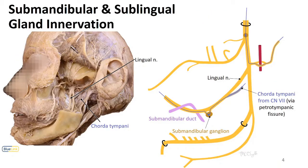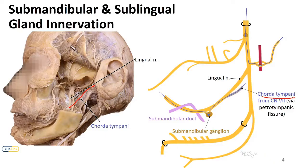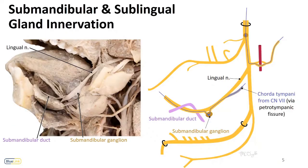Next is innervation of the submandibular and sublingual glands. This comes through the chorda tympani, which exits the skull through the petrotympanic fissure near the mandibular fossa. In the donor image we can see how it courses through the infratemporal fossa down to meet the lingual nerve — as also shown in the schematic. The chorda tympani originates from the facial nerve, which innervates these glands via chorda tympani. The preganglionic fibers follow the lingual nerve to the submandibular ganglion.